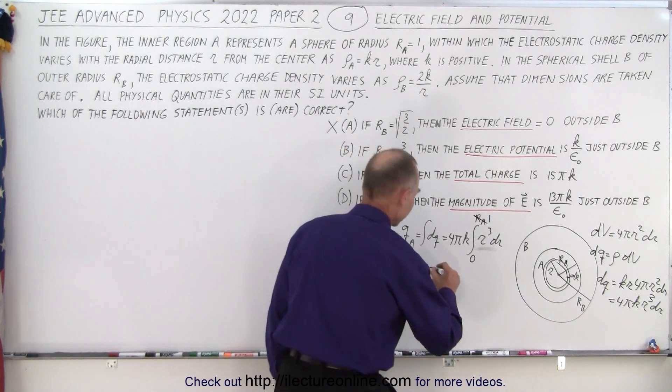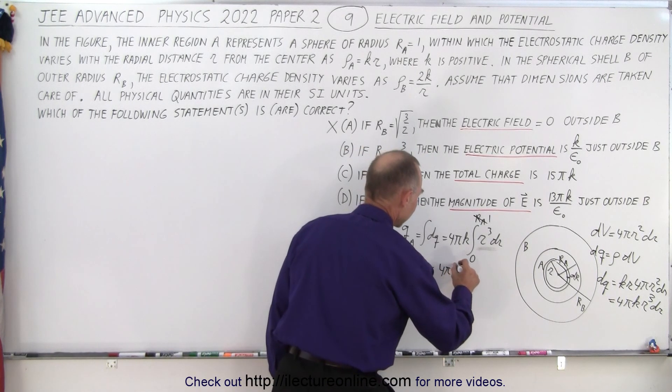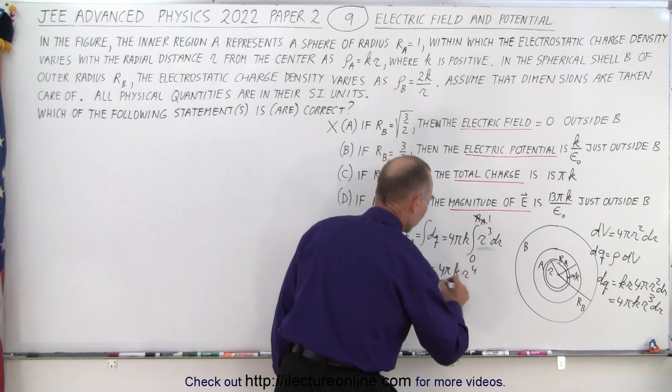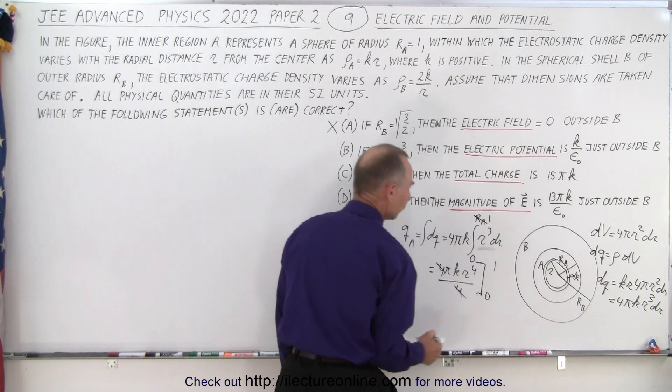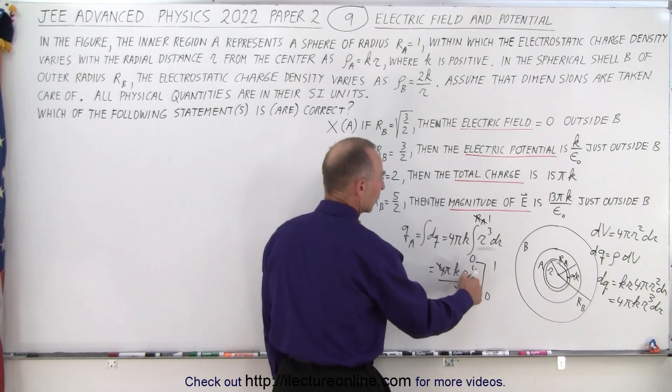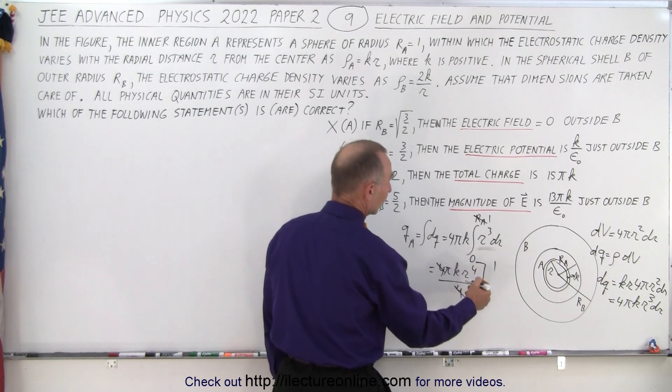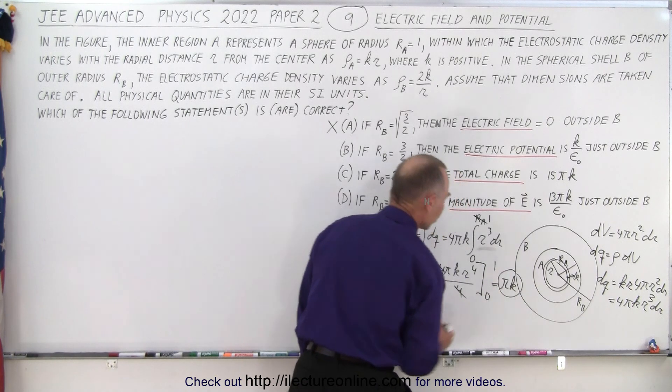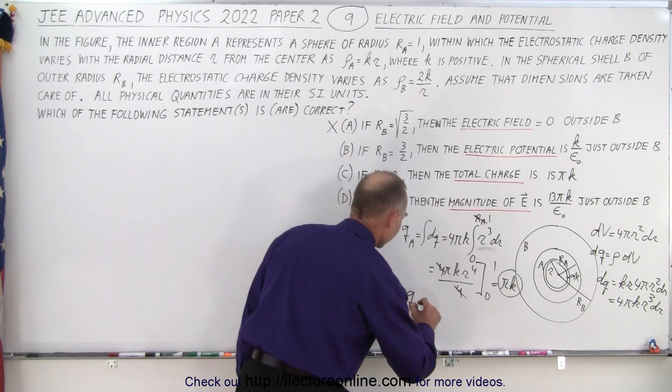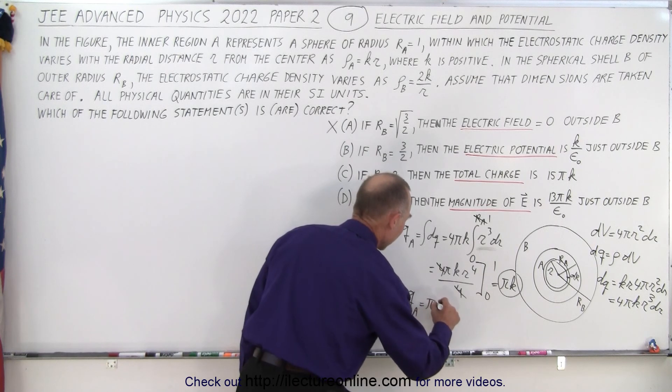So at that point we have, this is equal to 4 pi k r to the 4th over 4, so that cancels out, evaluated from 0 to 1. Plug in 0 you get nothing, plug in 1 you get 1, and so it turns out to be equal to pi times k. So that is the charge in A, so q inside A is equal to pi times k.